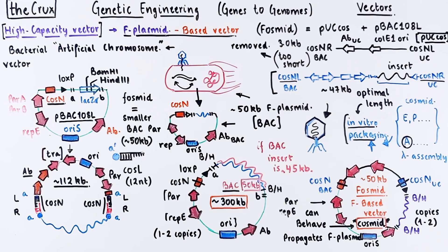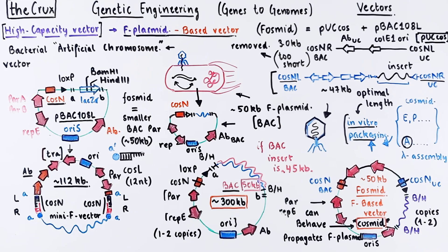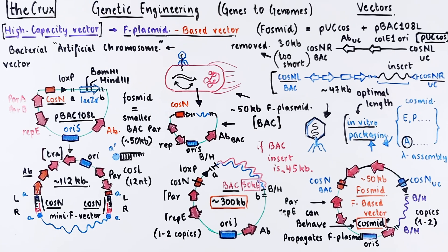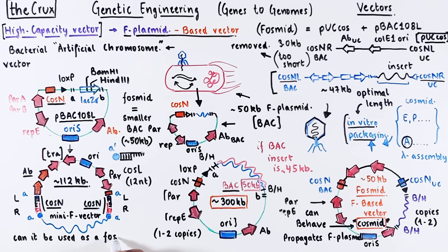Now I have a question for you. Notice this mini-F vector with two cosN sites? Pretend that instead of being 112 KB it was only 50 KB, which is the optimal length for lambda packaging. Do you think it can be used as a phasmid DNA? Do you think it'll work? Leave a comment below about what you think will happen. And as always, I will see you in the next video.